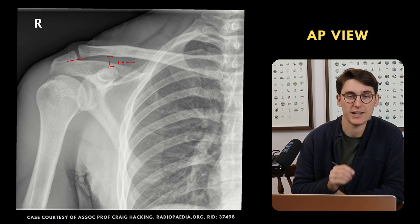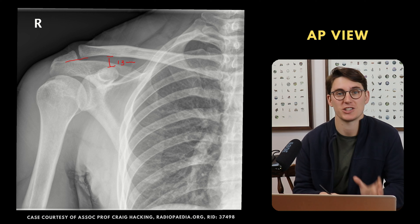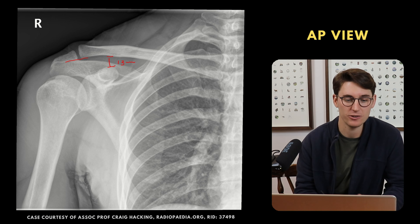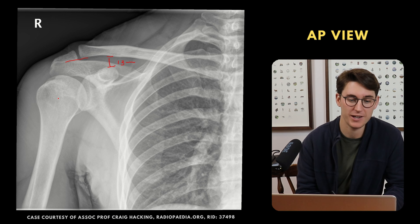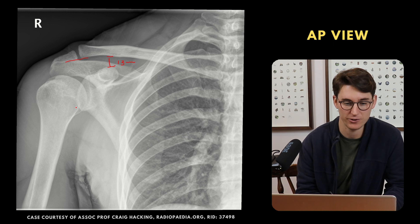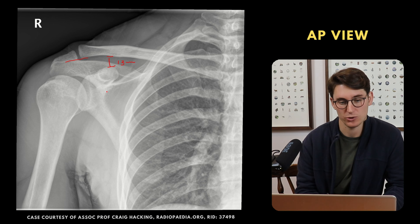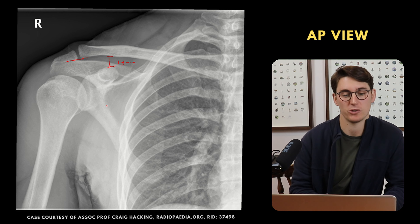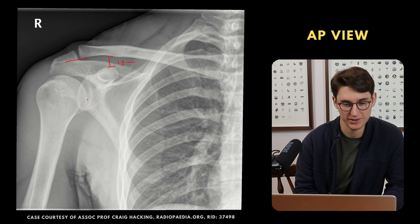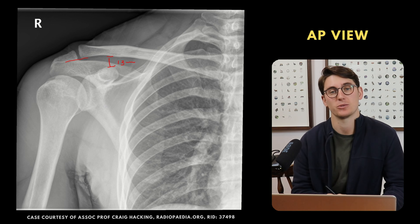The next question we need to ask is where is our humeral head sitting — is it within the glenoid fossa, or is it sitting inferior to our coracoid process? Here it's in the glenoid fossa, which is good.